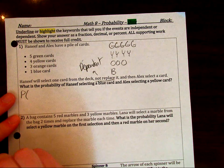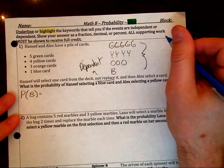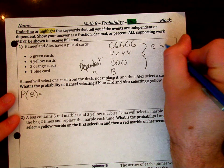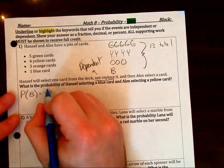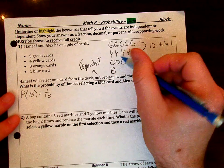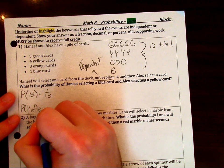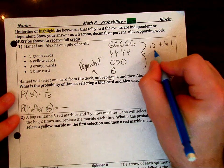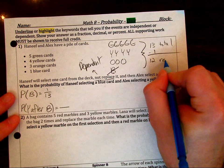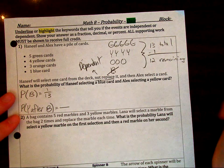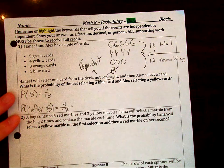What is the probability of Hanif selecting a blue card and Alex selecting a yellow card? So probability of picking a blue first. There is a total of 13. So that's going to be our denominator. How many of which are blue? We only have one.